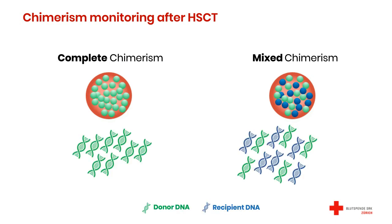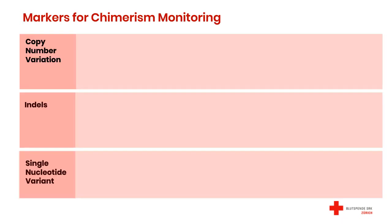We do not analyze chimerism in the recipient directly by looking at cells in the bone marrow or blood. We analyze the DNA extracted from the blood or bone marrow of the recipient. For this purpose, we need markers to discriminate between the DNA of the donor and the DNA of the recipient. There are three different genetic variations commonly used in chimerism monitoring: copy number variation, indels, and single nucleotide variants.